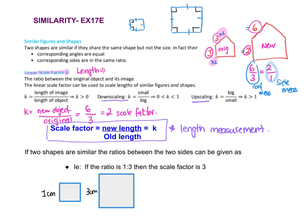Sometimes the scale factor is written as a ratio. In the square example, instead of saying the scale factor is three, they'd write it as 1 to 3. Using our formula — scale factor equals new over original — we have three over one, which gives a scale factor of three.